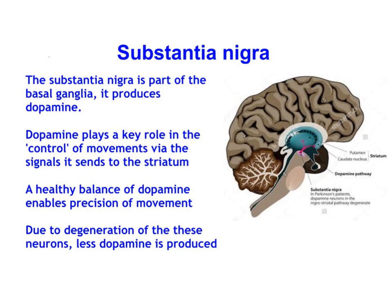The flip side is that a lack of dopamine produced by this part of the brain results in slowed and uncoordinated movements. Parkinson's disease is caused by a degeneration of the neurons in the substantia nigra that produce dopamine.